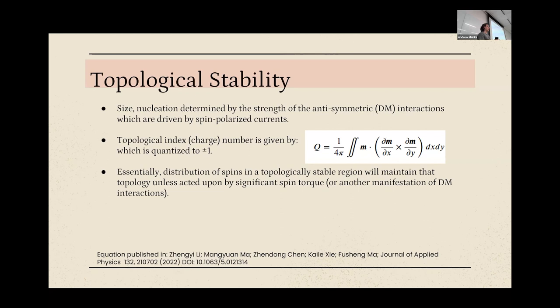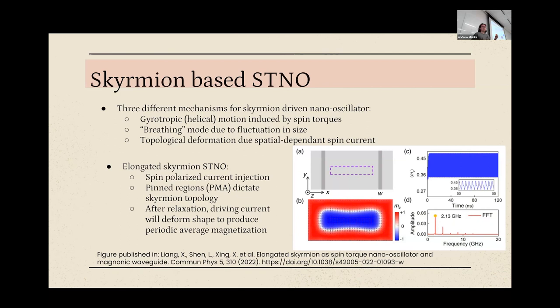This is what makes skyrmions so unique and useful — they maintain their shape despite their surroundings. They can be traveling through a thin magnetic film that is completely polarized in one direction, yet have this unique vortex-like polarization with their own domain walls. A couple of ways this is useful: basically turning this stable topological manifold into a nano oscillator, which drives oscillating spin waves. The three mechanisms for getting this started are gyrotropic helical motion induced by spin torques, the breathing mode due to fluctuation in size, and deformation due to spatially dependent spin current.